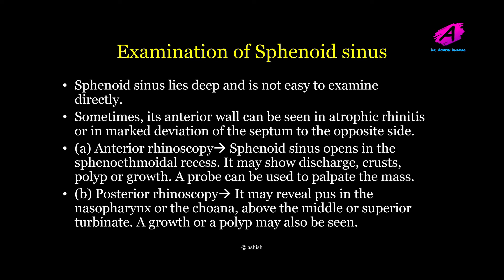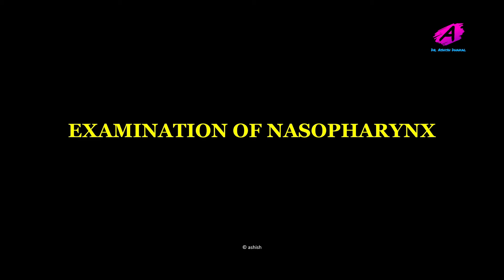Examination of the sphenoid sinus: it lies deep and is not easy to examine directly. Sometimes its anterior wall can be seen in atrophic rhinitis or in a markedly deviated septum on anterior rhinoscopy. The sphenoid sinus opens in the sphenoethmoidal recess and may show discharge, crusting, polyps, or growth. A probe can be used to palpate the mass. On posterior rhinoscopy it may reveal pus in the nasopharynx or the choana above the middle and superior turbinates. Palpation of the sphenoid sinus cannot be done.